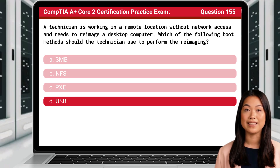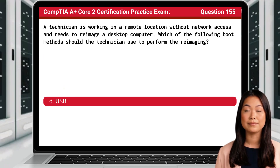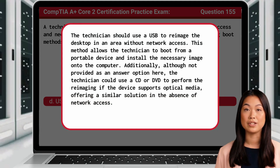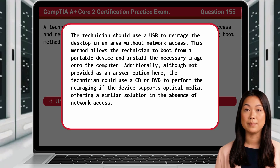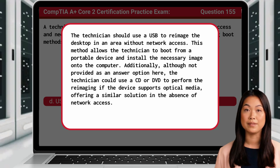The answer is D: USB. The technician should use a USB to re-image the desktop in an area without network access. This method allows the technician to boot from a portable device and install the necessary image onto the computer. Additionally, although not provided as an answer option here, the technician could use a CD or DVD to perform the re-imaging if the device supports optical media, offering a similar solution in the absence of network access.